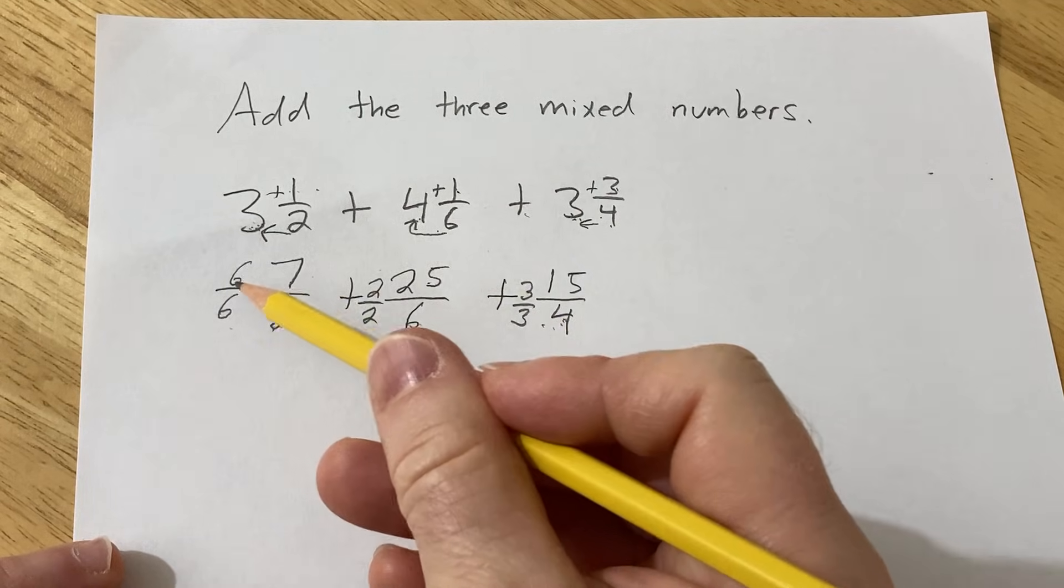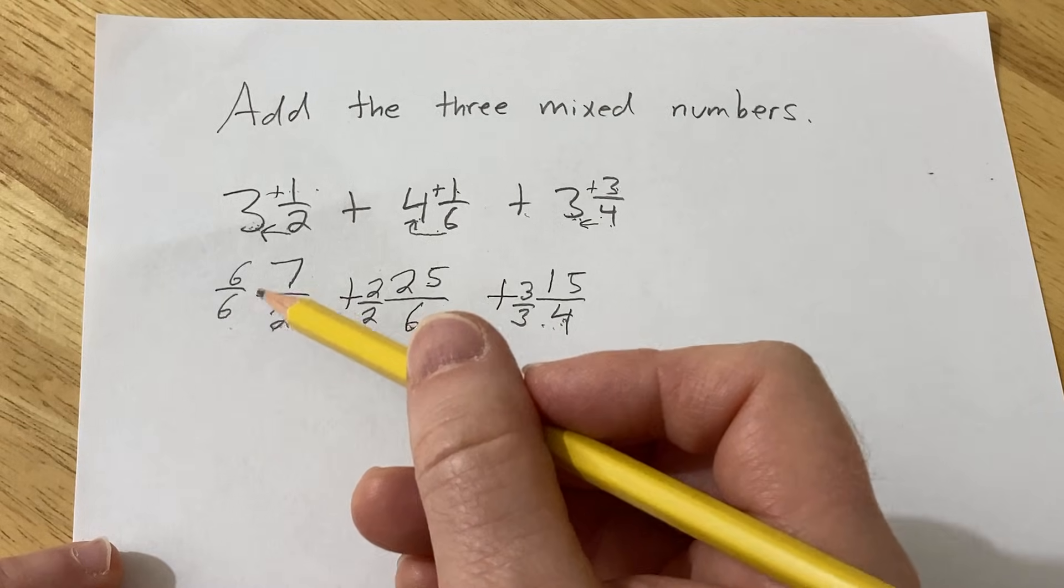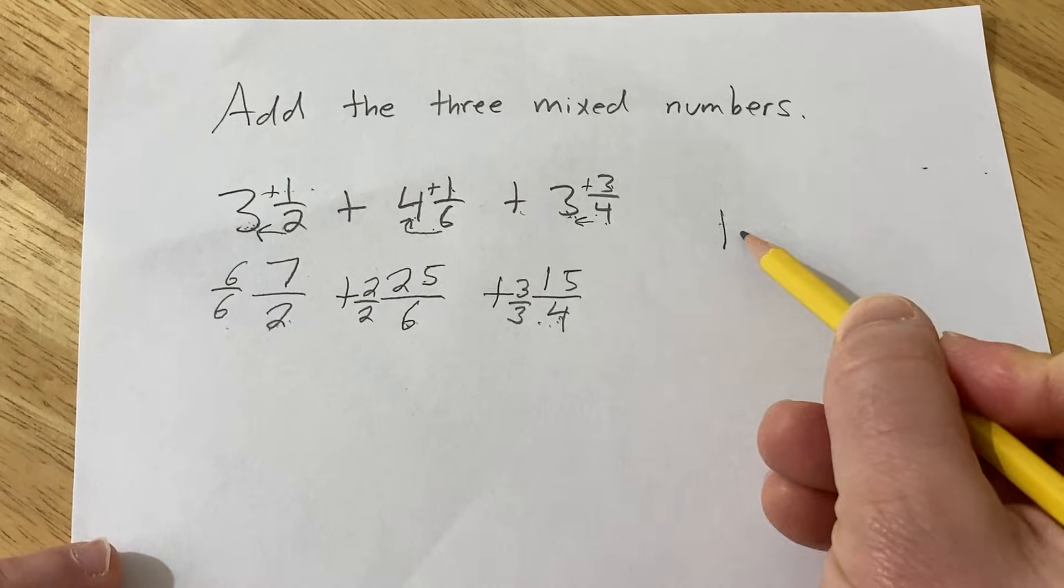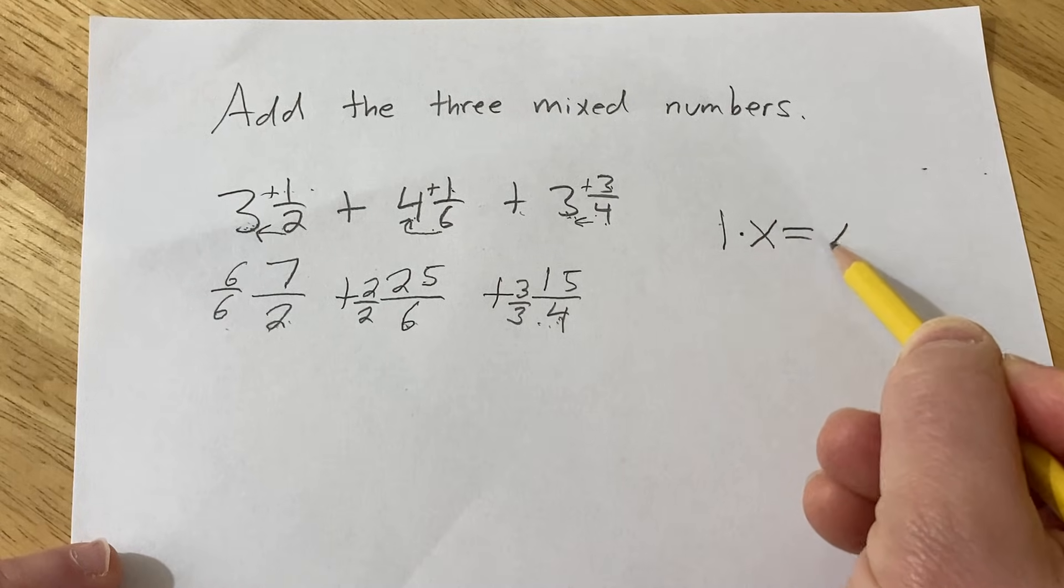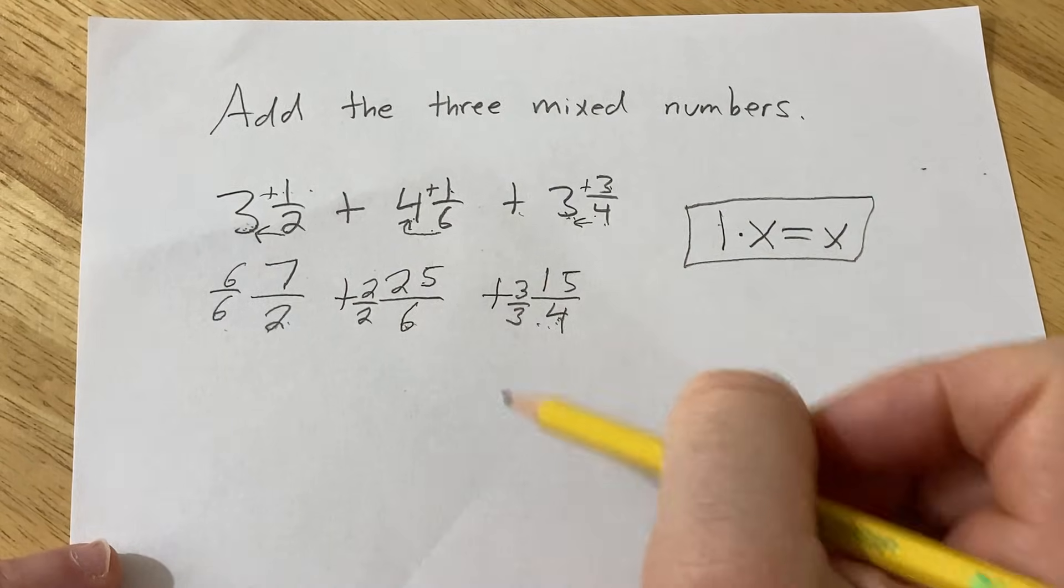By the way, the reason we have to multiply by a number over a number is because you're not allowed to just multiply numbers. But you are allowed to multiply any number by 1, because we have this super important thing in math that says 1 times x is equal to x. And this super powerful equation allows us to do this procedure.